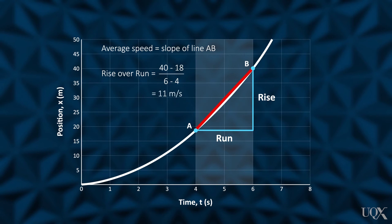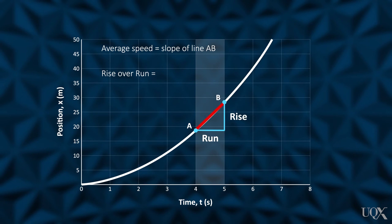The average speed is 11 meters per second. If we reduce the time interval involved from 4 to 5 seconds, we achieve a better estimate of the instantaneous speed at 4 seconds. We get 9 meters per second. The closer we get to 4 seconds, the closer we get to the instantaneous speed at 4 seconds.